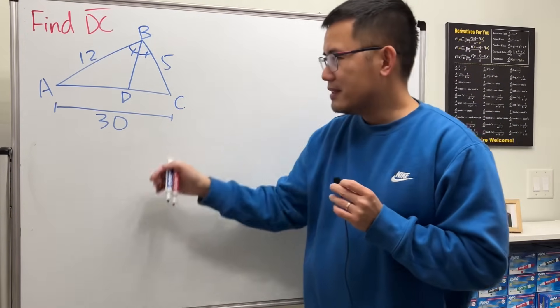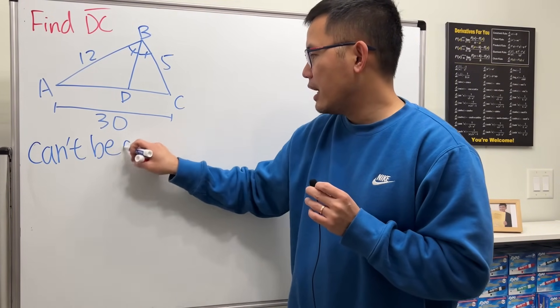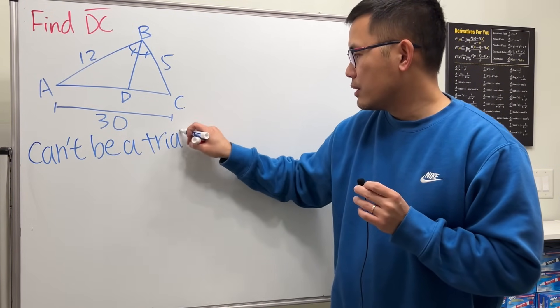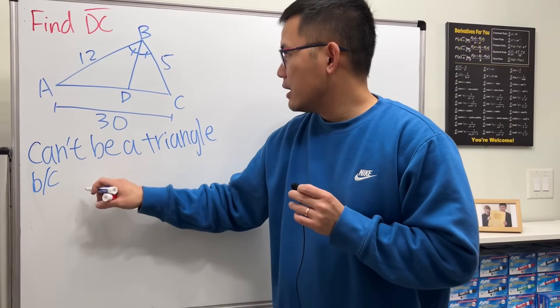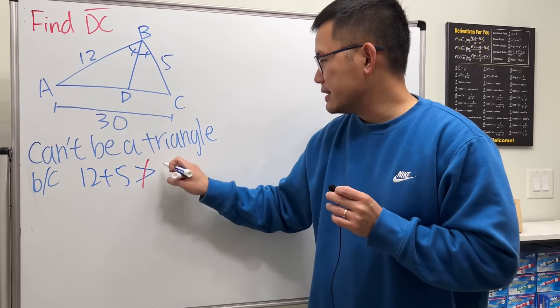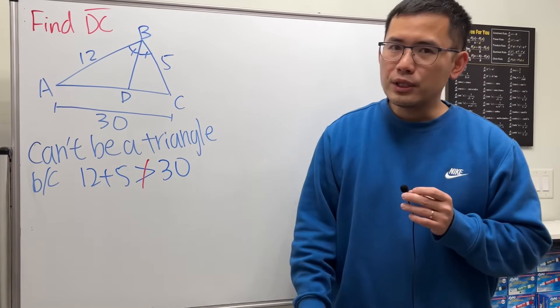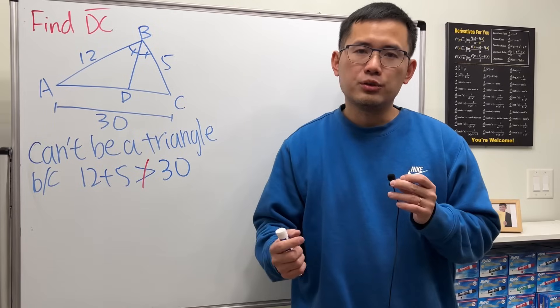So in fact, this is not a valid picture. I will tell you that this right here can't be a triangle because 12 plus 5 is not bigger than 30. You have to make sure that the sum of any two sides of a triangle has to be greater than the third side.